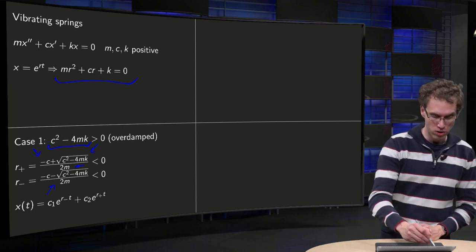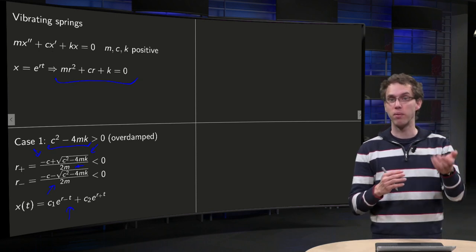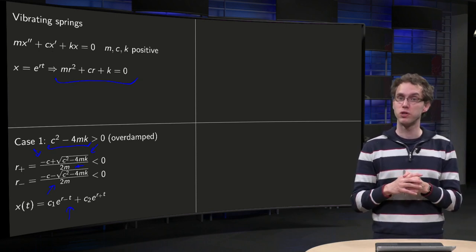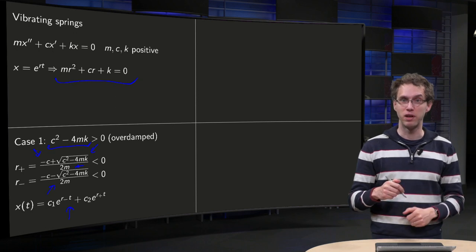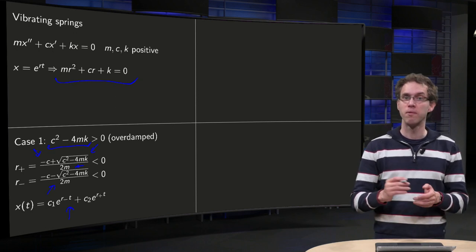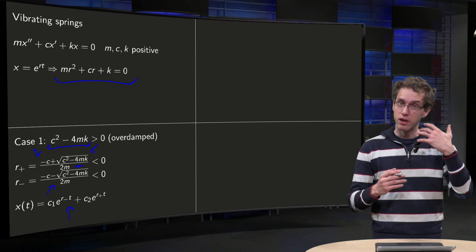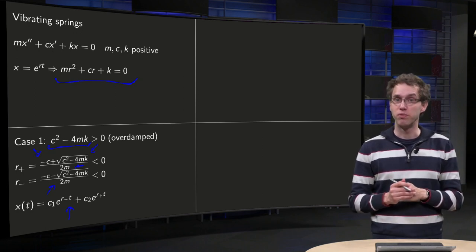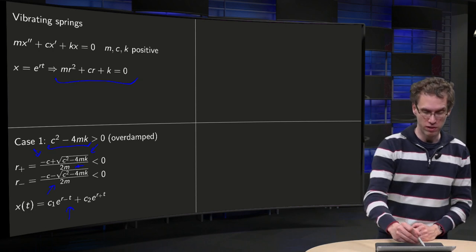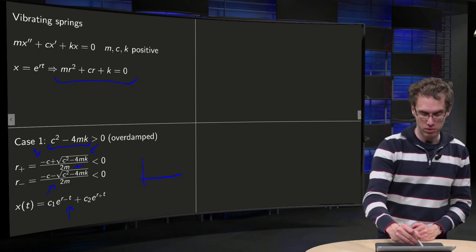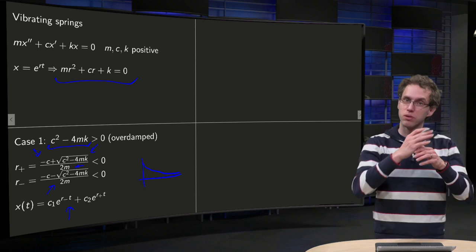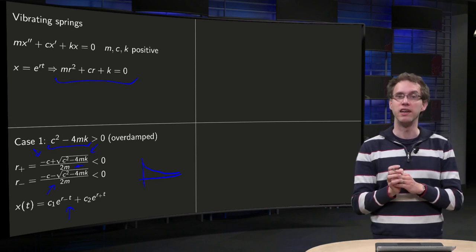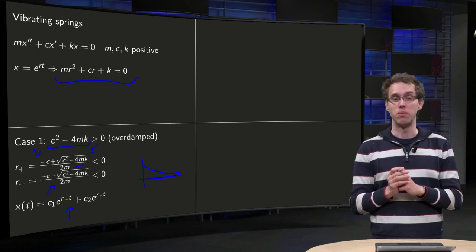So your solution x of t equals c1 e to the power r minus t plus c2 e to the power r plus t, with two negative exponentials. So what would happen if time goes on, those negative exponentials become very small and your motion damps out immediately. So you would have something like this, motion goes down to zero immediately.